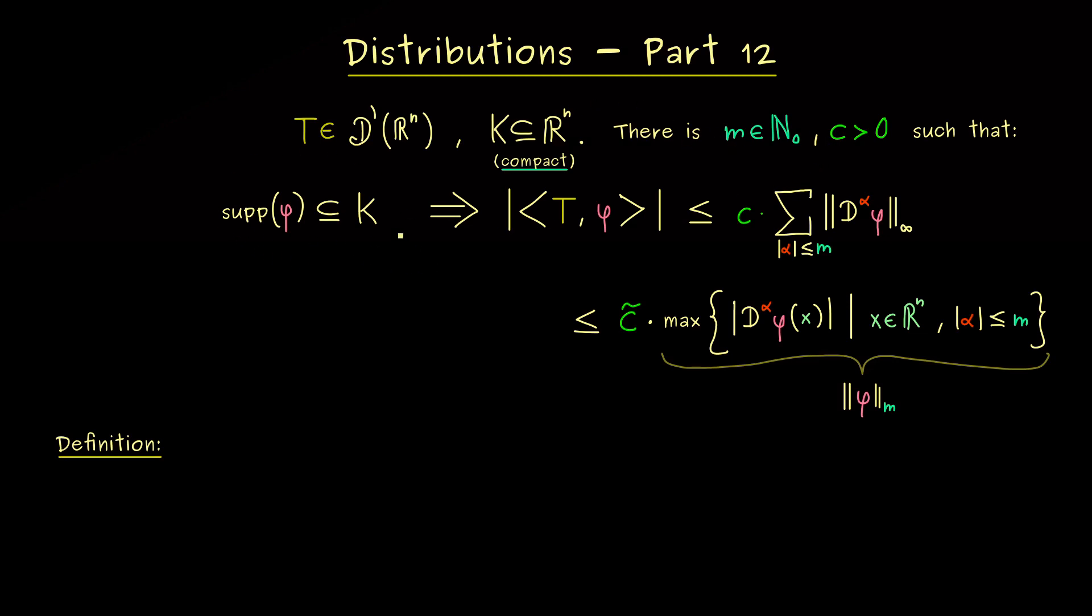So instead of saying that for each compact set K we find constants m and c such that for all test functions φ we have this estimate, now we want to say that there is such a constant m such that for all compact sets we have the thing. And if we have exactly this, we call T a distribution of finite order, or shorter, you could say a finite order distribution. And moreover, we can say more precisely it's of finite order m if m is the number from before.